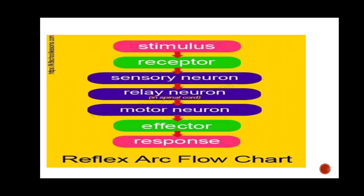The motor neuron transfers the message to the effectors, and the effectors act it out. So your hand can be both receptor and effector — whenever you see a hot object, for example a candle.